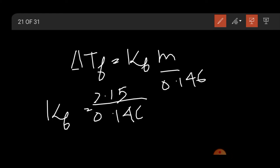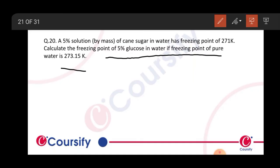Delta Tf equal to Kf m. So m is point 146. Then Kf will be 2.15 divided by 0.146. Now for the next solution.